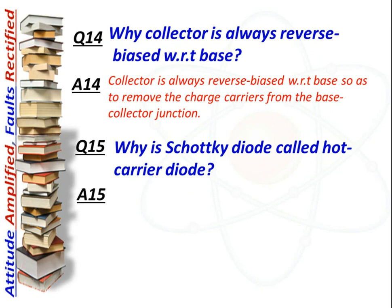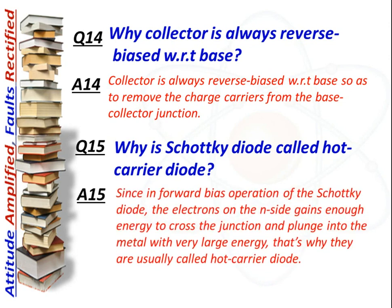Next question: Why is the Schottky diode called a hot carrier diode? Answer: In forward biased operation of the Schottky diode, the electrons gain enough energy to cross the junction and enter the metal with very large energy. That is why they are called hot carrier diodes.